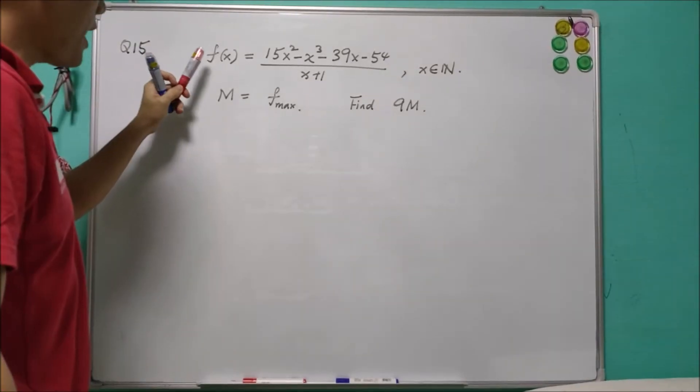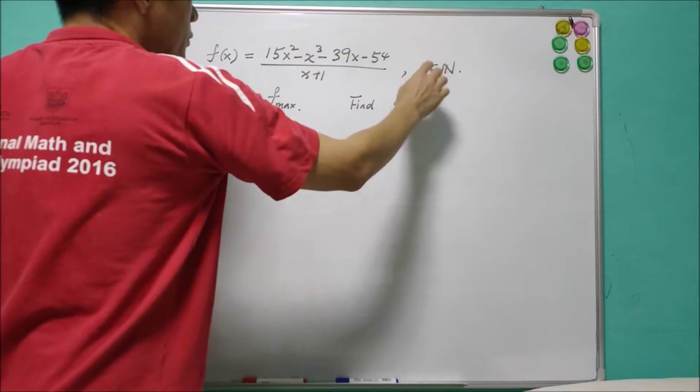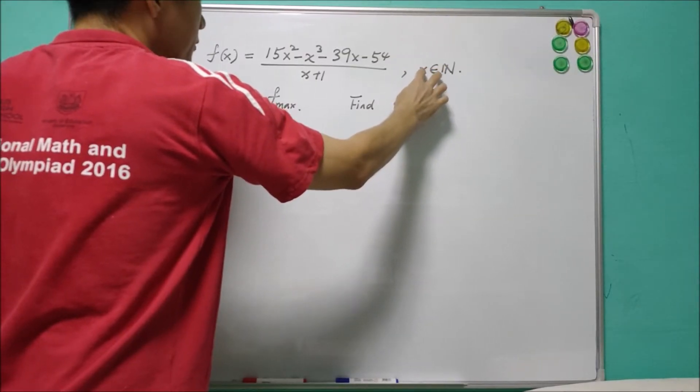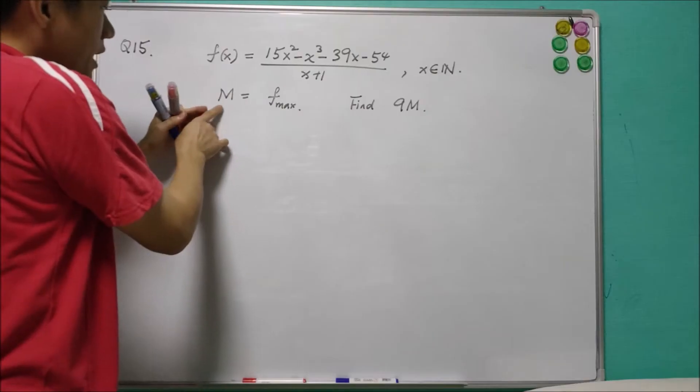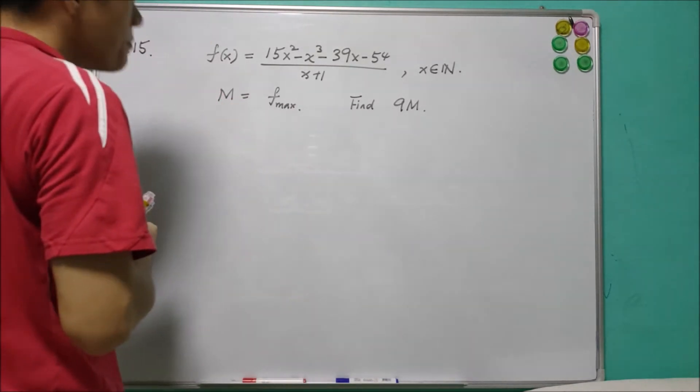This is question 15. Suppose f is a function defined by this expression but we only allow x to be positive integer. Suppose m is the maximum value for this function. What is the value for 9m?